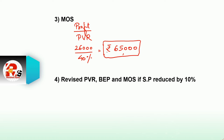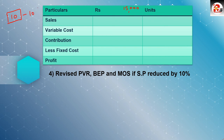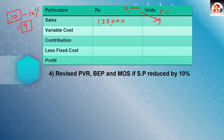Now comes the important revision part of the question: revise PVR, BEP, and margin of safety if selling price is reduced by 10%. Units remain the same at 15,000. Original selling price was Rs. 10 per unit. Selling price reduced by 10%: 10 minus 10% equals Rs. 9 per unit. New sales amount: 9 multiplied by 15,000 equals 1,35,000. Sales have been reduced by 10%.